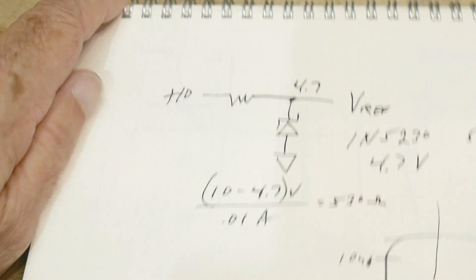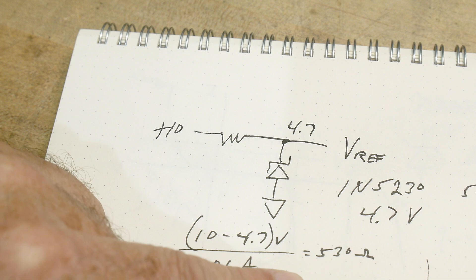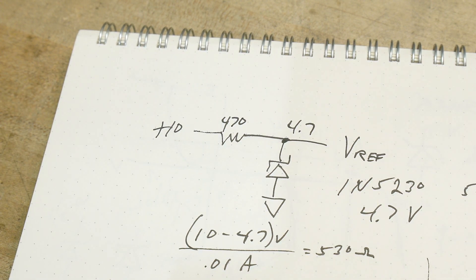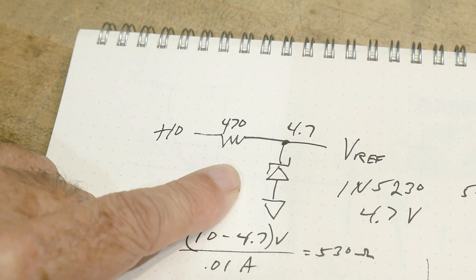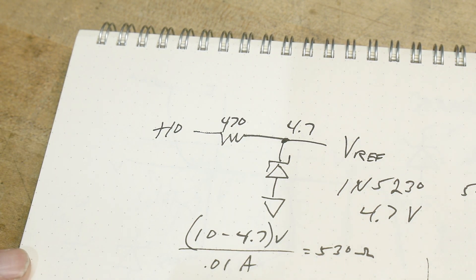All right. So I think 510 is a number, but I have some 470. So we're going to put 470. Well, that means we'll put in a little bit more than we need and that's okay. So we're going to have 470 ohms and this should give us a V ref.